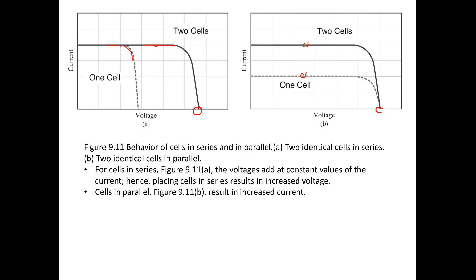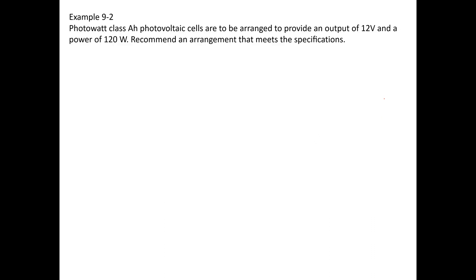So let's look at this example problem here. It reads that Photowatt class AH photovoltaic cells are to be arranged to provide an output of 12 volts and a power of 120 watts. We recommend an arrangement that meets the specification.